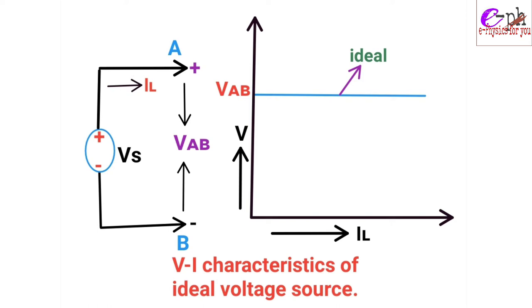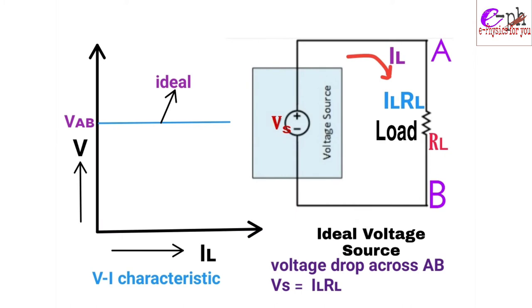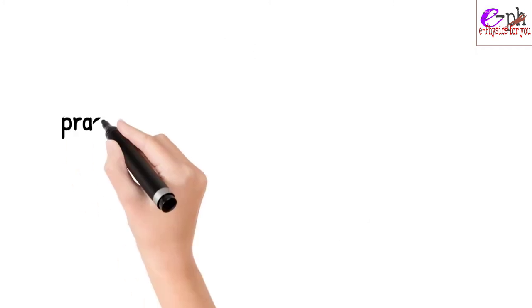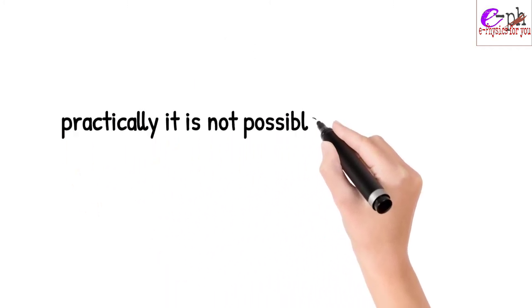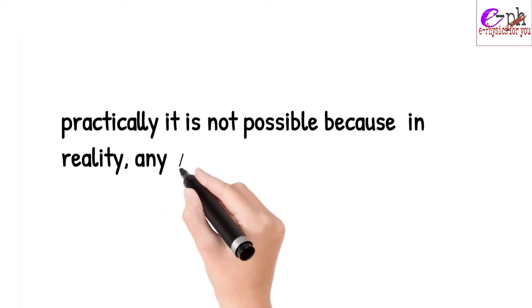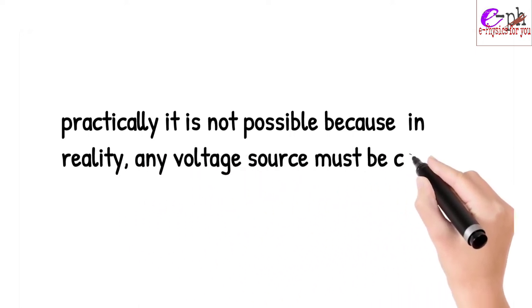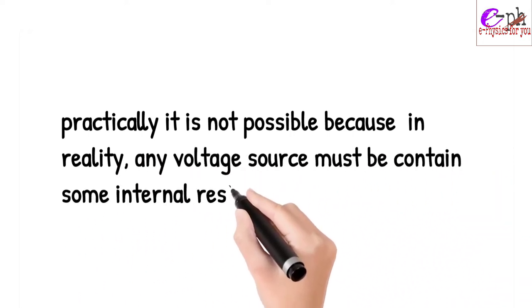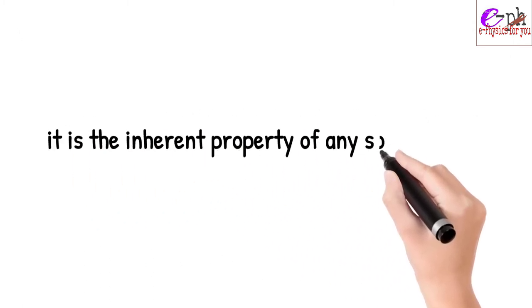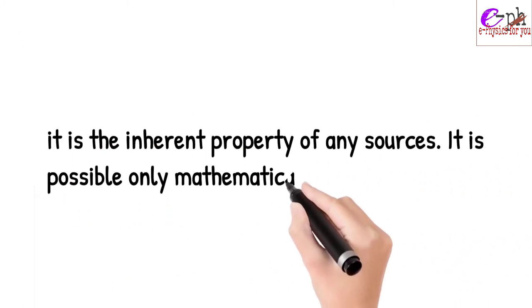This graph shows that if we increase the current in the circuit, the voltage drop across the load must remain constant, as V_AB equals V_S. However, practically this is not possible because in reality any voltage source must contain some internal resistance. It is the inherent property of any source — it is only possible mathematically.